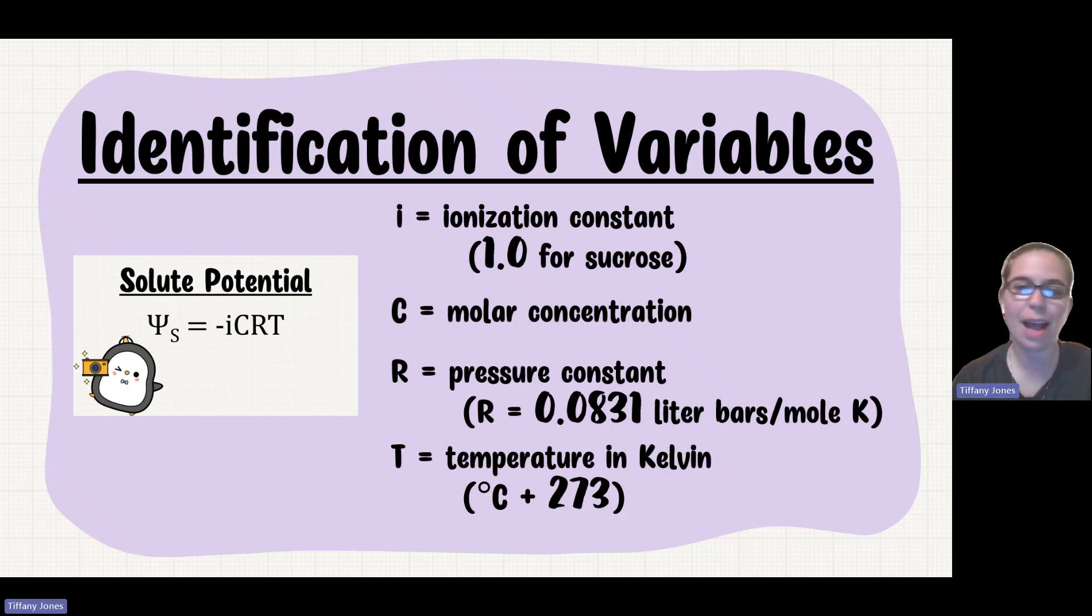i is your ionization constant. How many ions are formed when the solute goes into a solvent, traditionally water? Sucrose is going to have an ionization constant of one because it has a covalent bond and thus will not dissociate into ions. Sodium chloride is going to have an ionization constant of two because you'll have your sodium ion and your chloride ion.